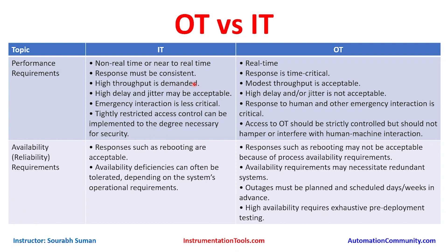High throughput is demanded in IT due to higher data volumes — we typically need 1 Gbps, 10 Gbps, or 100 Gbps links. But this is not required in OT. In OT, a 100 Mbps network is sufficient because OT systems barely consume four to five Mbps maximum throughput in a 24-hour period. The commands and data volume are pretty low unless backups are running.